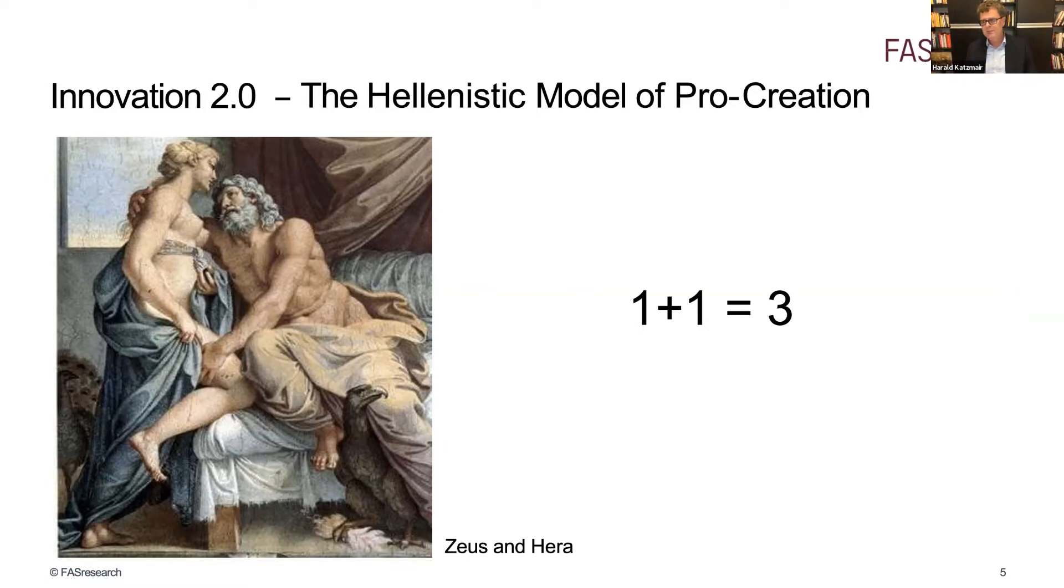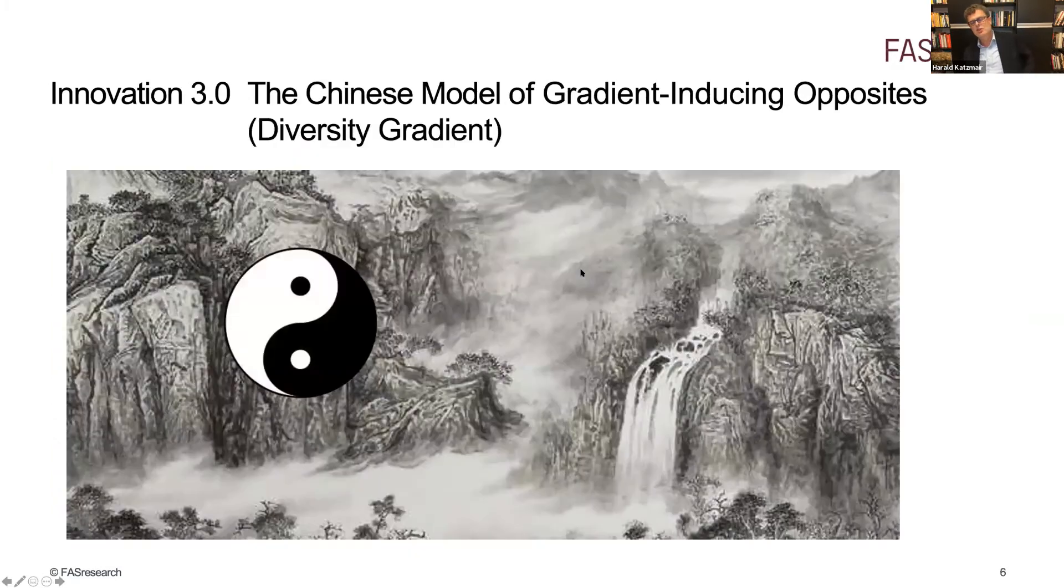There's another version, the Chinese model, and it's like the yin yang thing. It's a gradient inducing opposites. You have a diversity gradient, like the flowing water and the solid mountain. And because of the polarities, there's a gradient that creates, so to speak, the atmosphere where life can emerge, can regenerate, but also the new can grow.